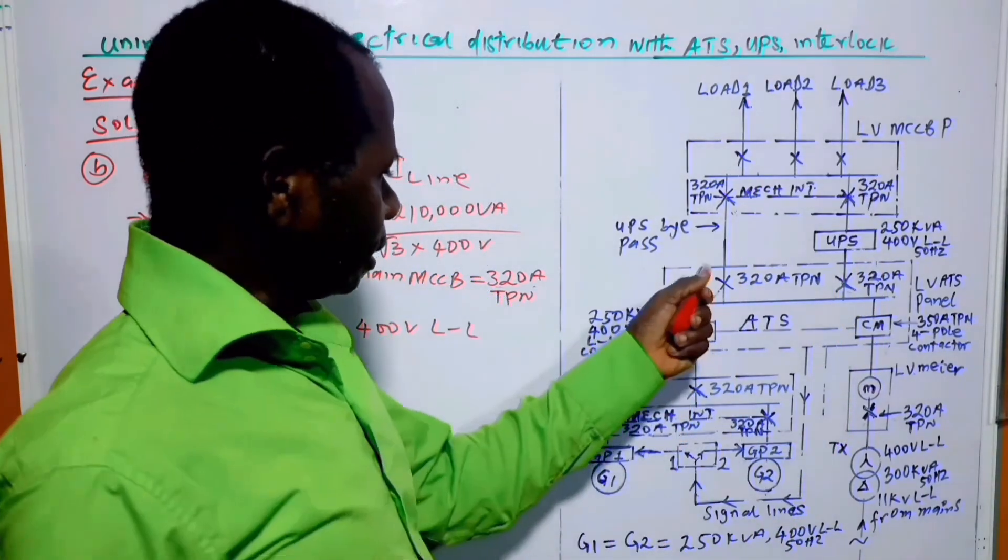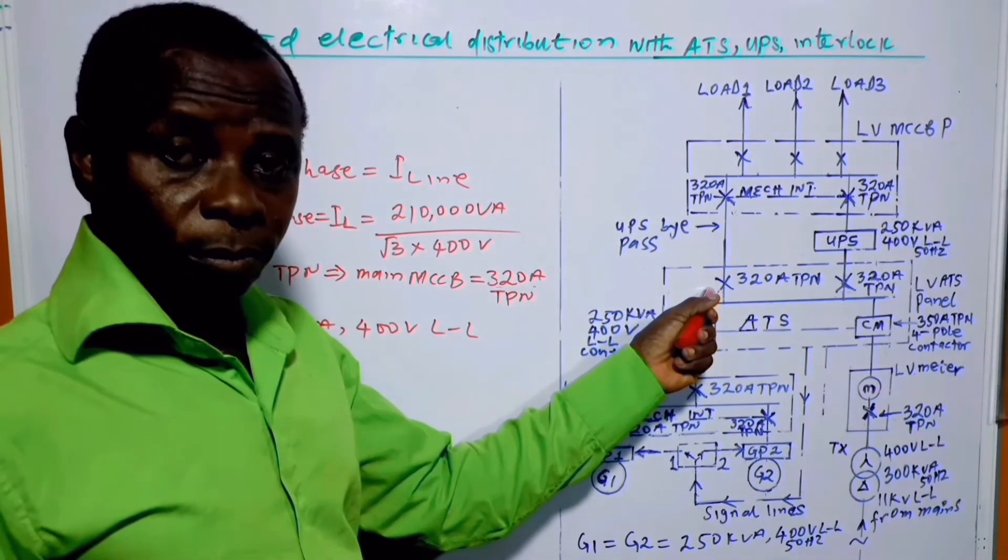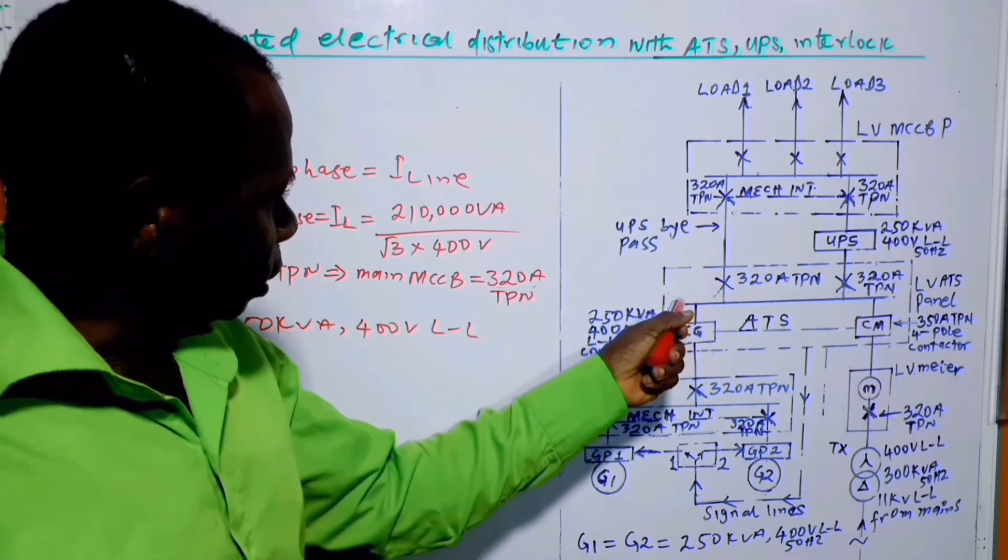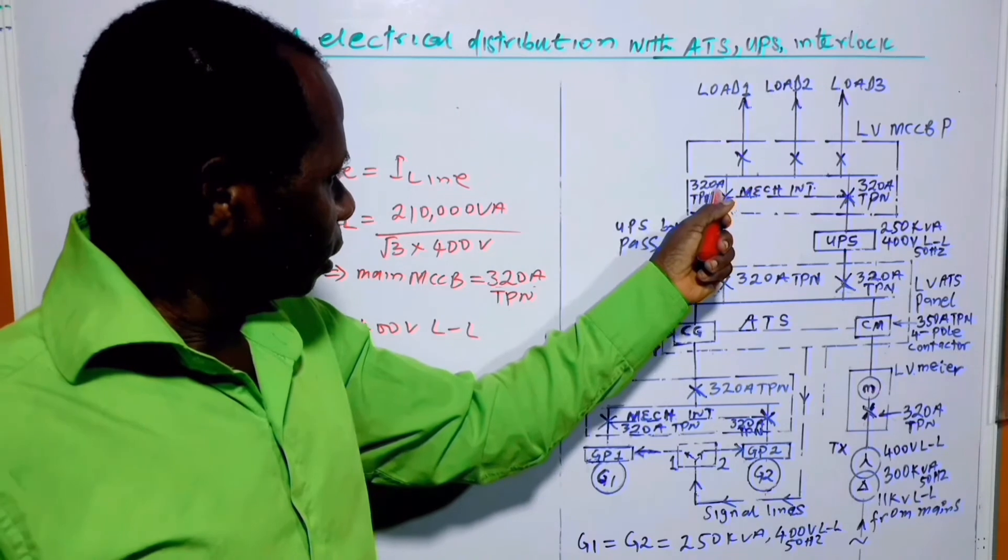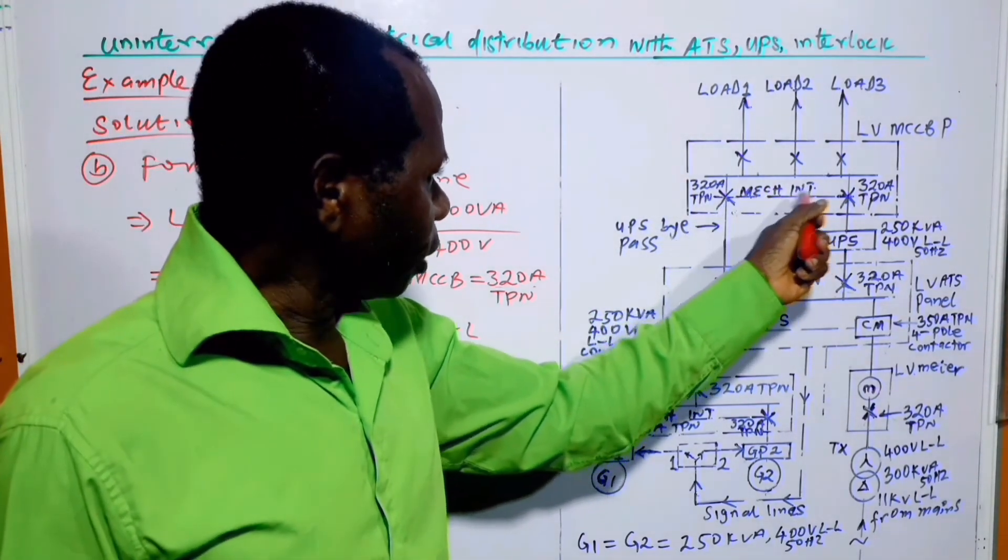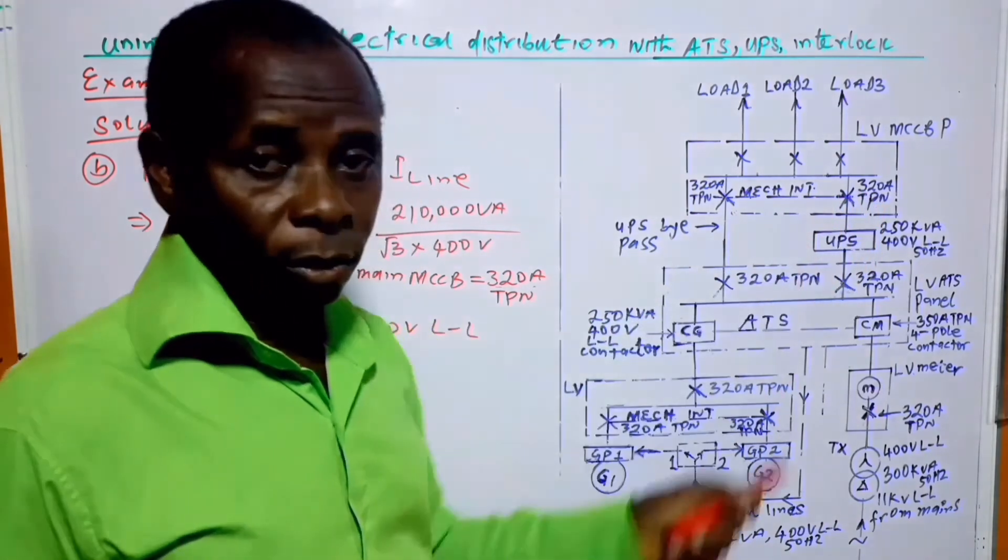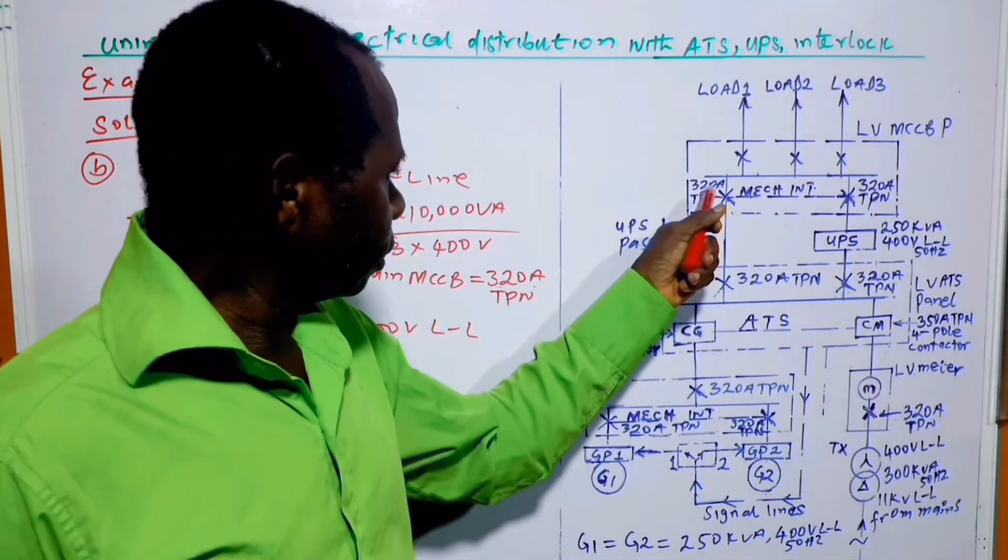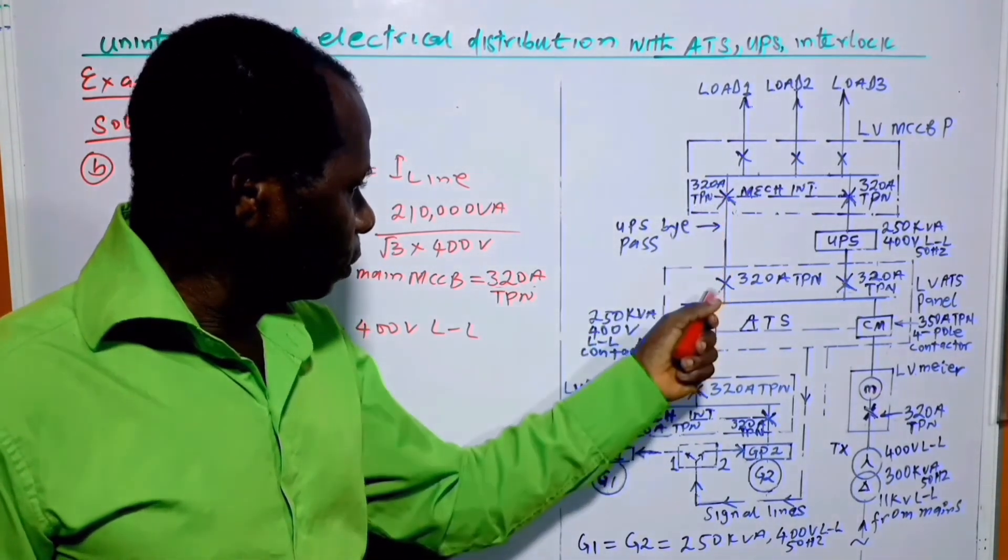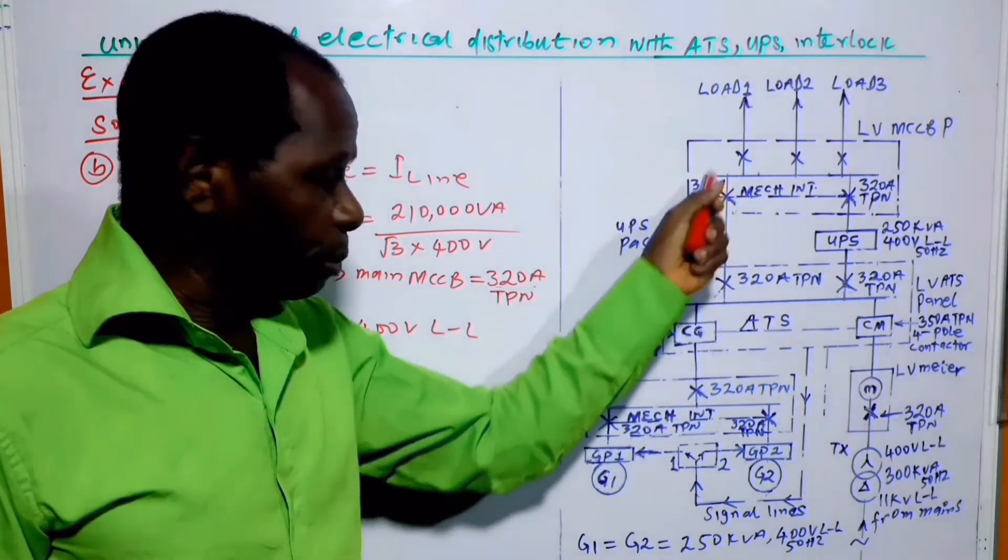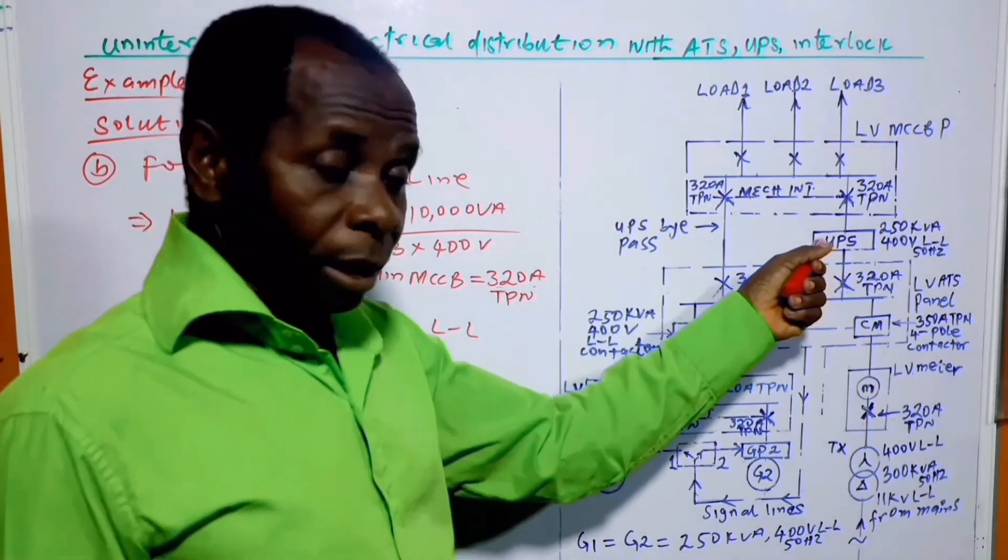Because normally, this circuit breaker here is left open. Because it is serving a different purpose. The interlock is adjusted such that it is only this circuit breaker that closes. This one opens. This one also opens. The interlock is such that these two circuit breakers become functional when the UPS has problem.